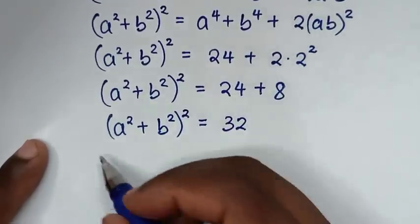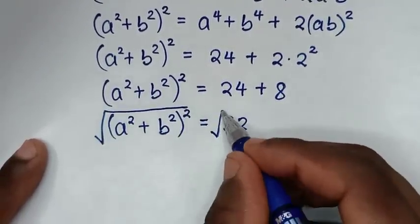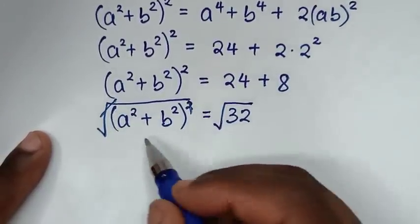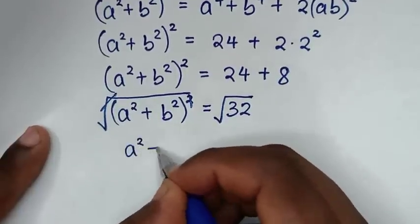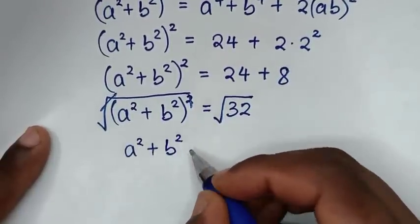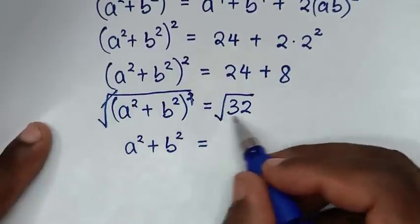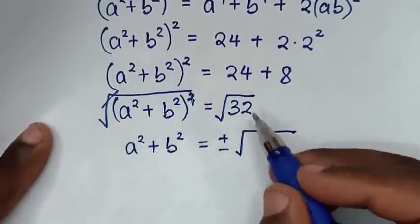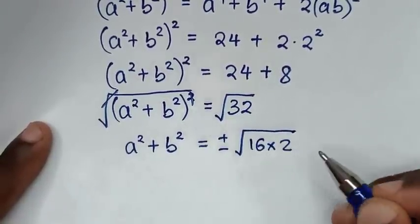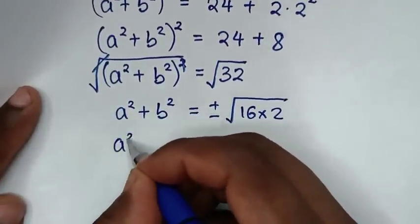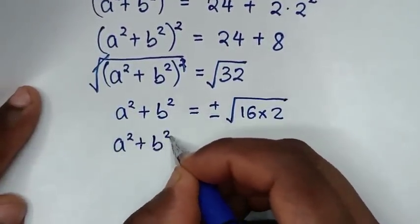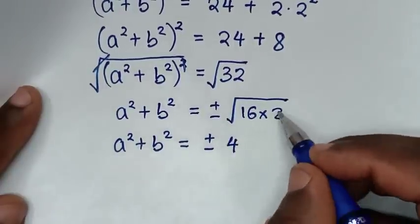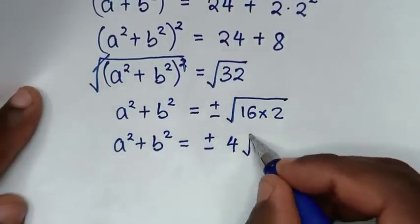In the next step we apply square root on both sides, canceling the square. So a² plus b² equals the square root of 32, which is plus or minus the square root of 16 times 2, giving plus or minus 4 root 2.